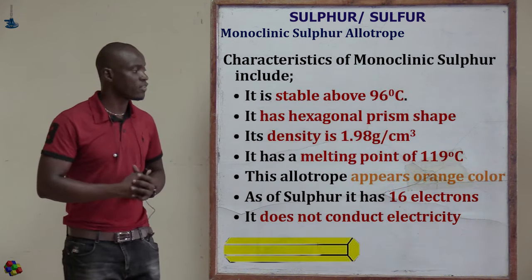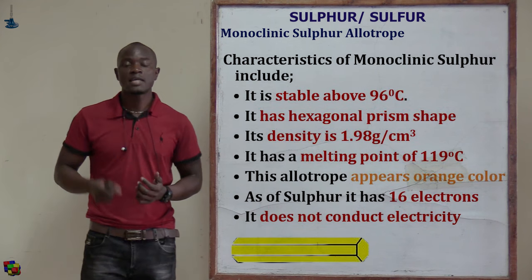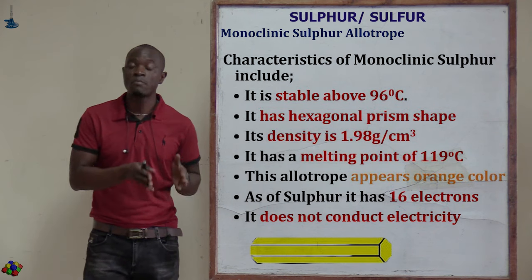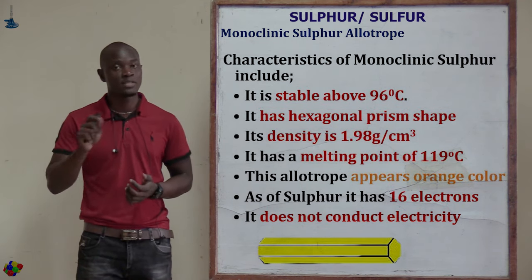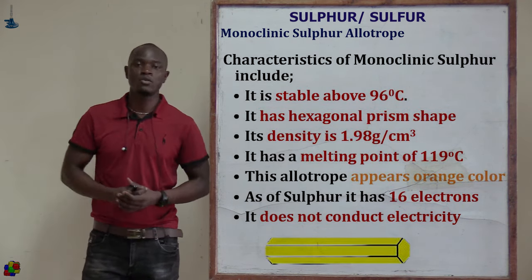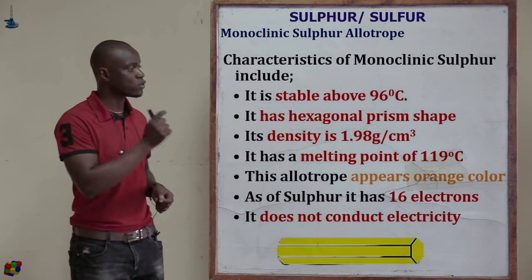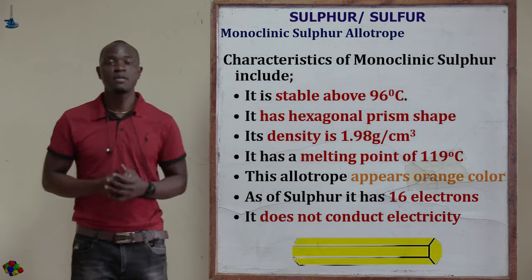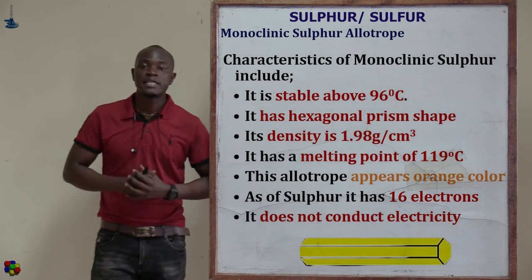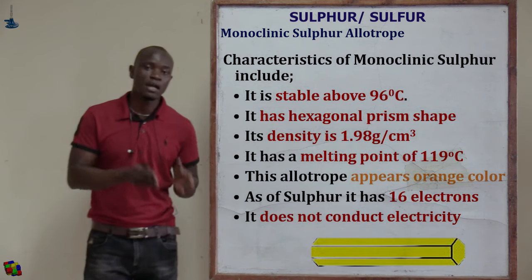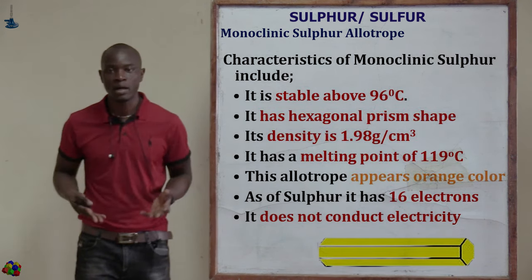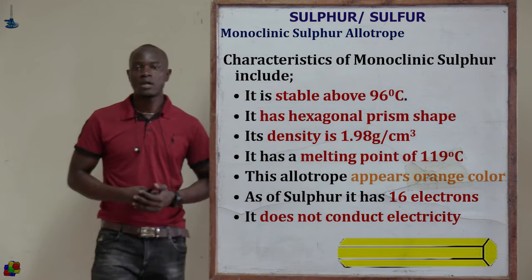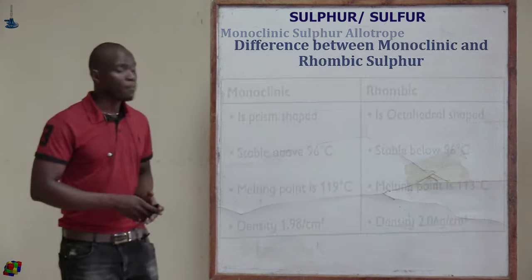The monoclinic sulfur has a density of 1.98 grams per centimeter cubed, compared to rhombic sulfur's density of 2.06 grams per centimeter cubed. Monoclinic sulfur also has a melting point of 119 degrees Celsius, and it assumes an amber or orange color.